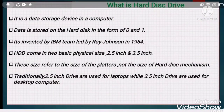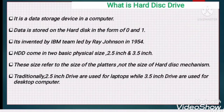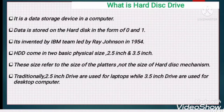The first type is magnetic drive — that is the hard disk drive. The hard disk is the heart of your computer or CPU. It is a data storage device in a computer. Data is stored on the hard disk in the form of 0 and 1 — where 0 is an off bit and 1 means an on bit — these are binary digits. It was invented by an IBM team led by Ray Johnson in 1954.